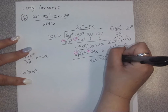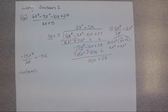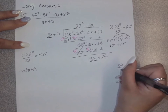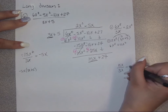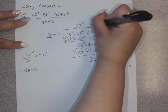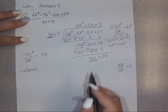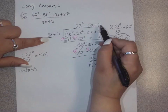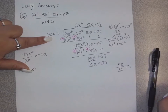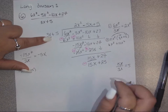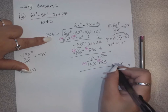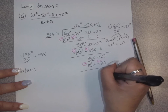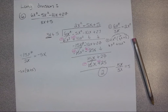Bring down the plus 27 and repeat the process again. Our new term is 15x divided by the first term of the divisor, 3x. 15 over 3 is 5, and the x's cancel, so plus 5 goes up in the quotient. Multiply 5 by 3x plus 5: 5 times 3x is 15x, and 5 times 5 is 25. Subtracting, 15x minus 15x adds up to zero, and 27 minus 25 gives us 2. This 2 is your remainder.